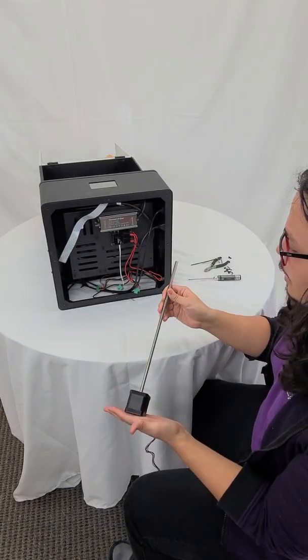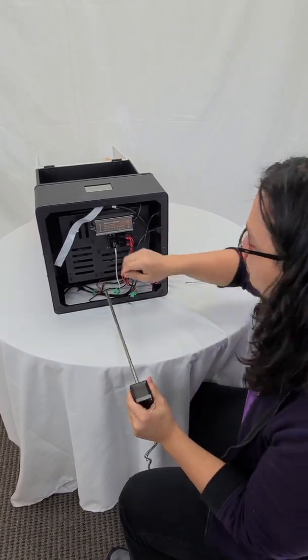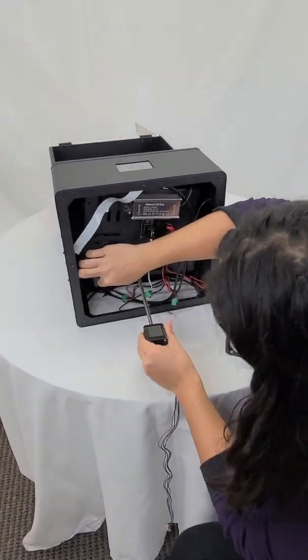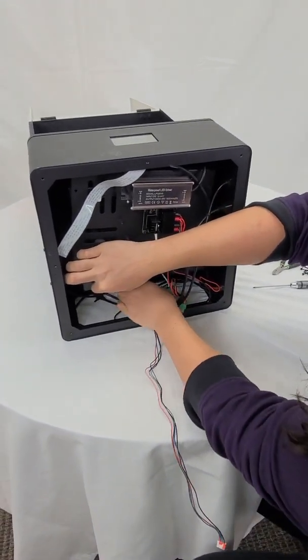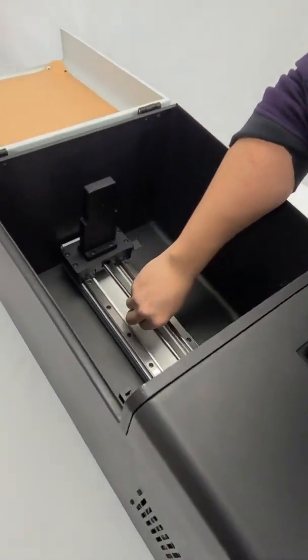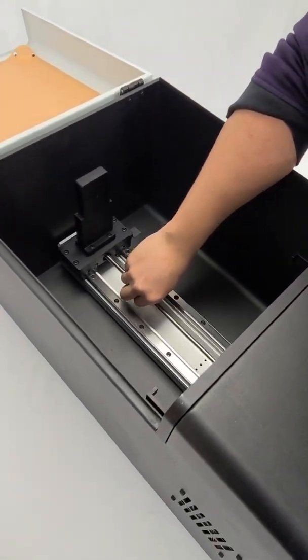Now we have our new threaded rod and motor, so we're going to do the reverse. Make sure that this bracket is lifted up, then slide this straight through and go over the top here. Make sure this is going straight into the carriage.